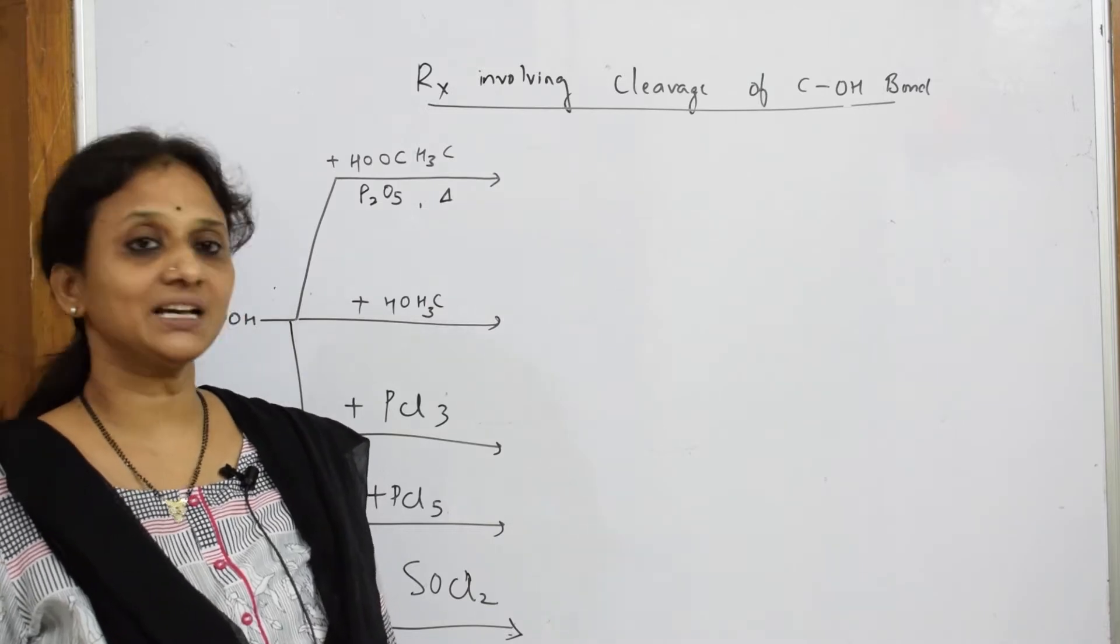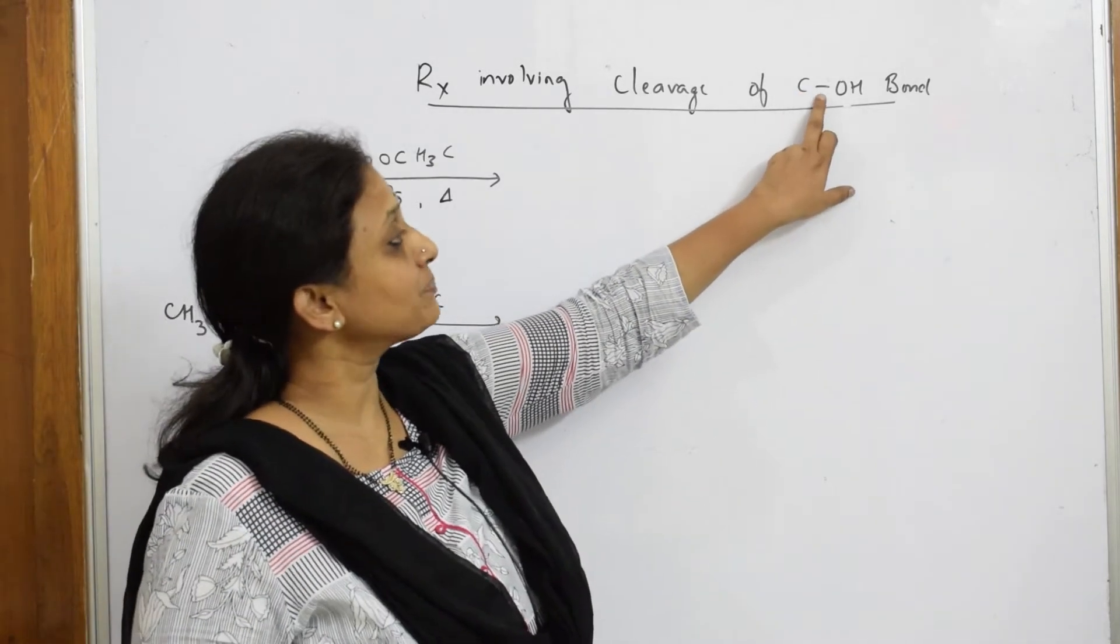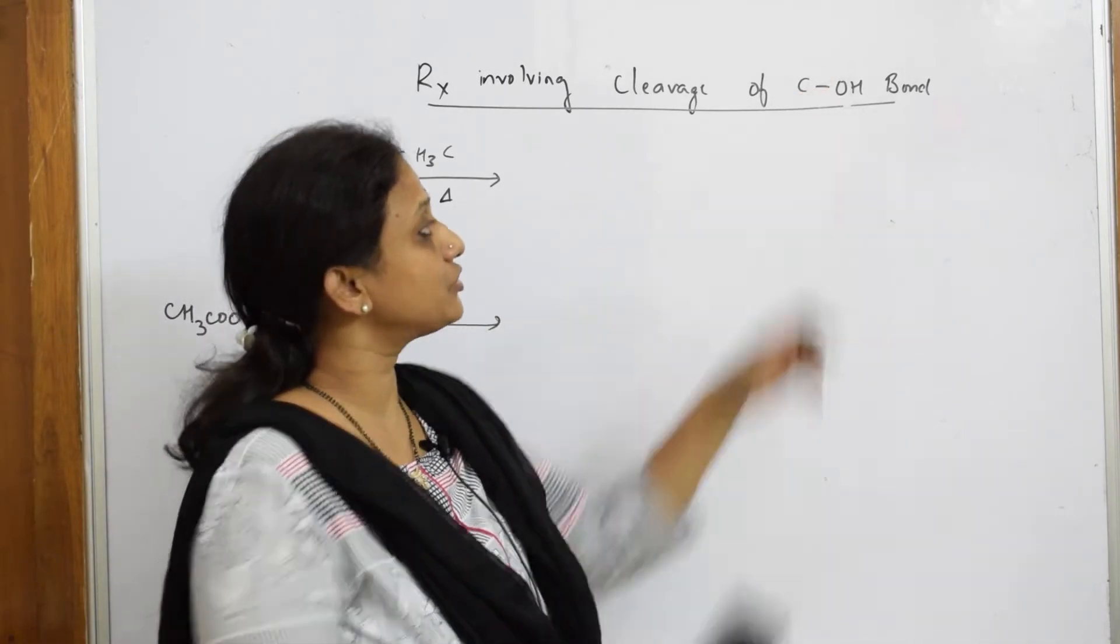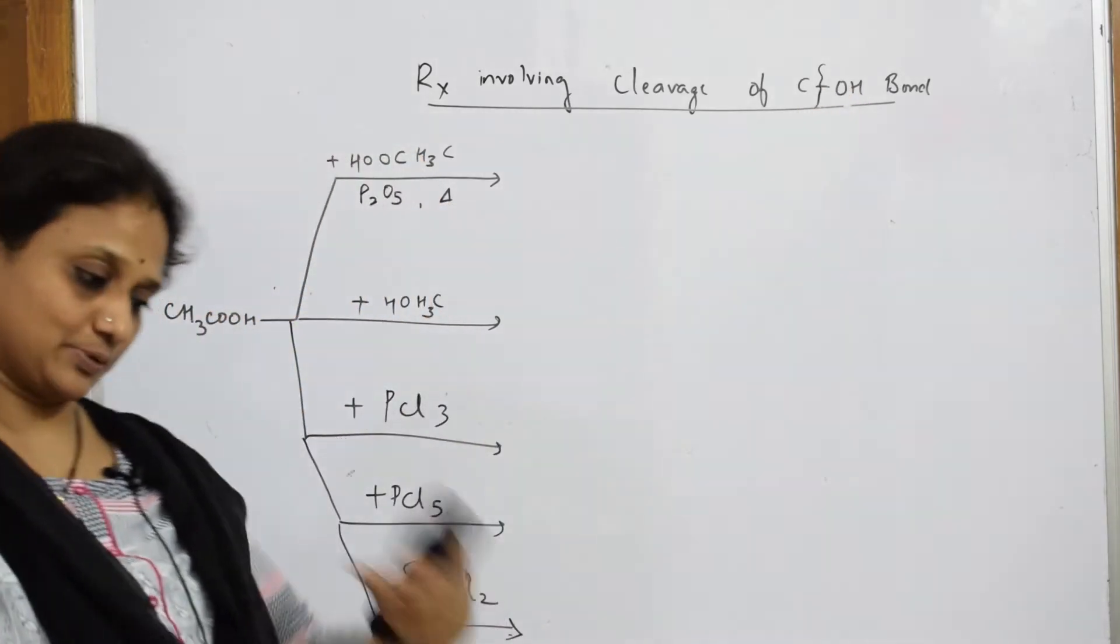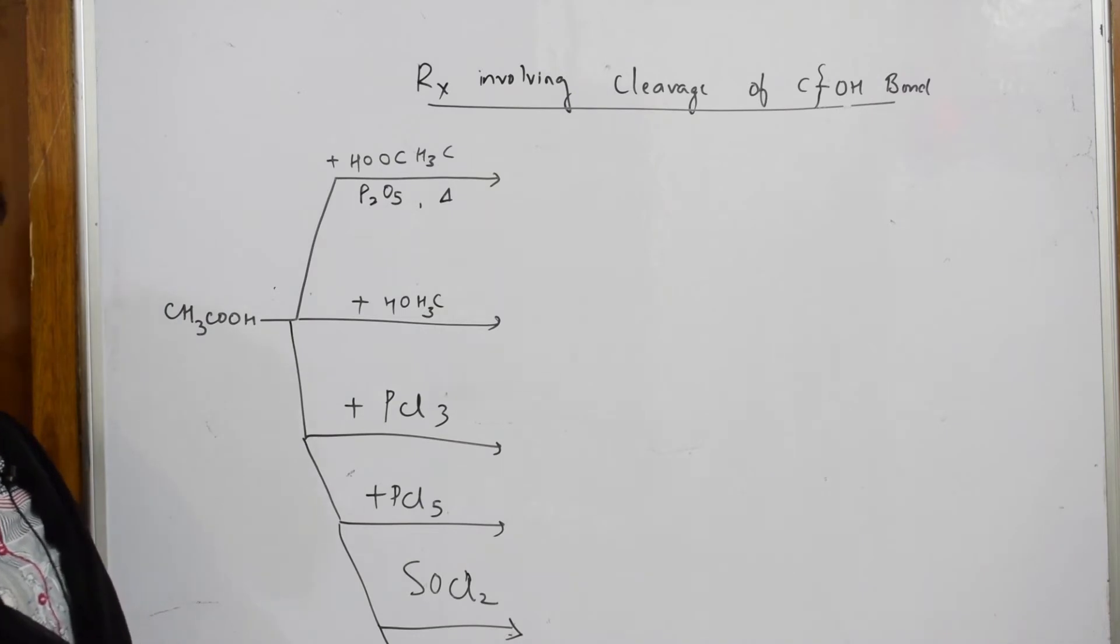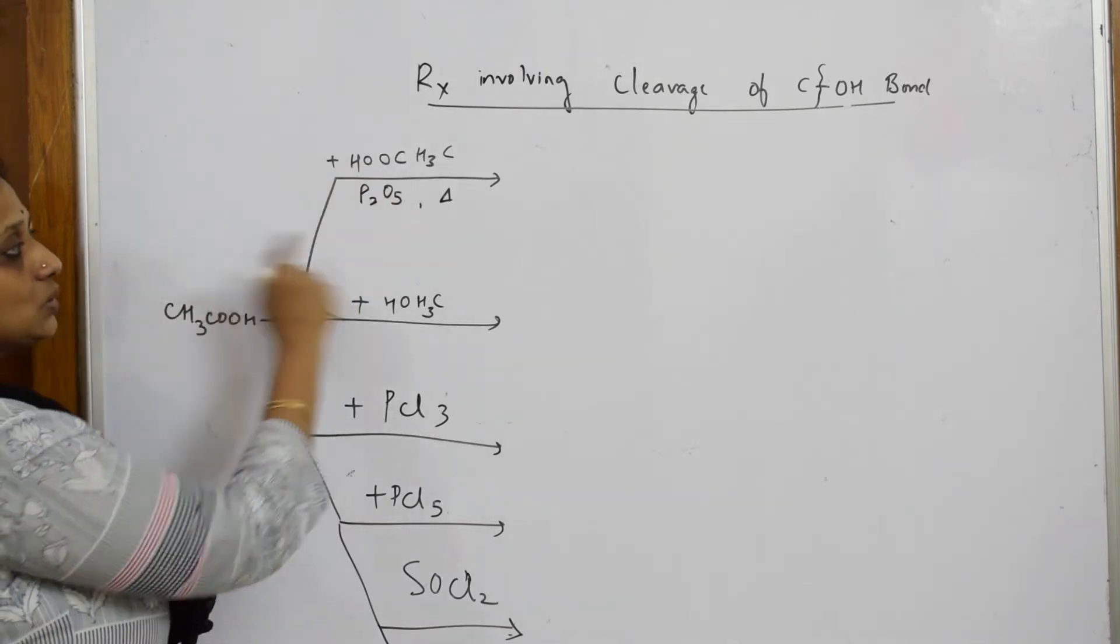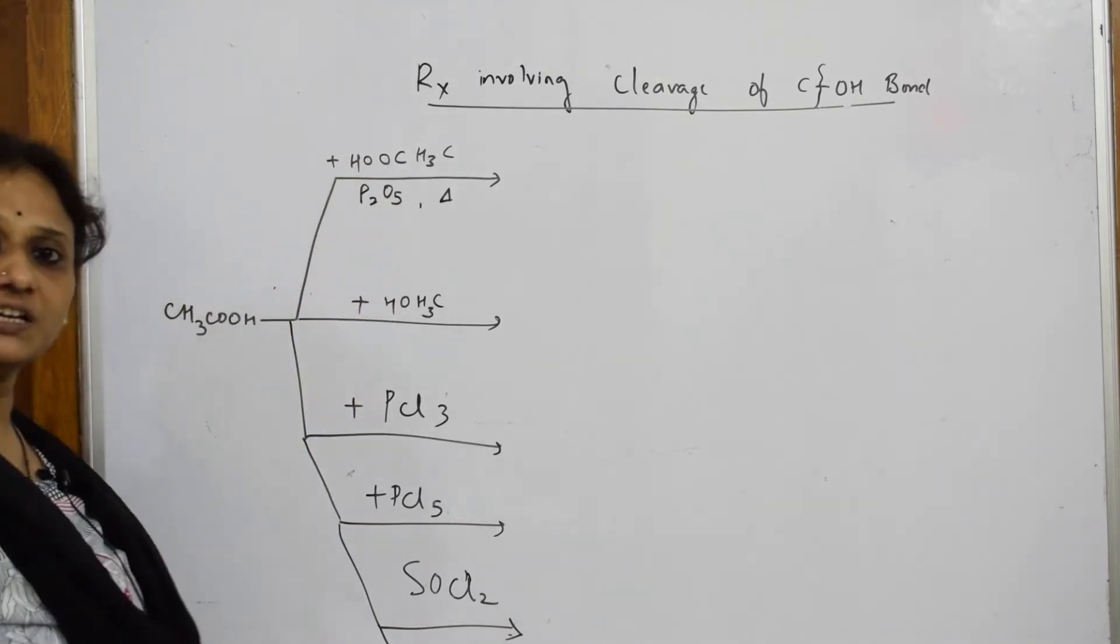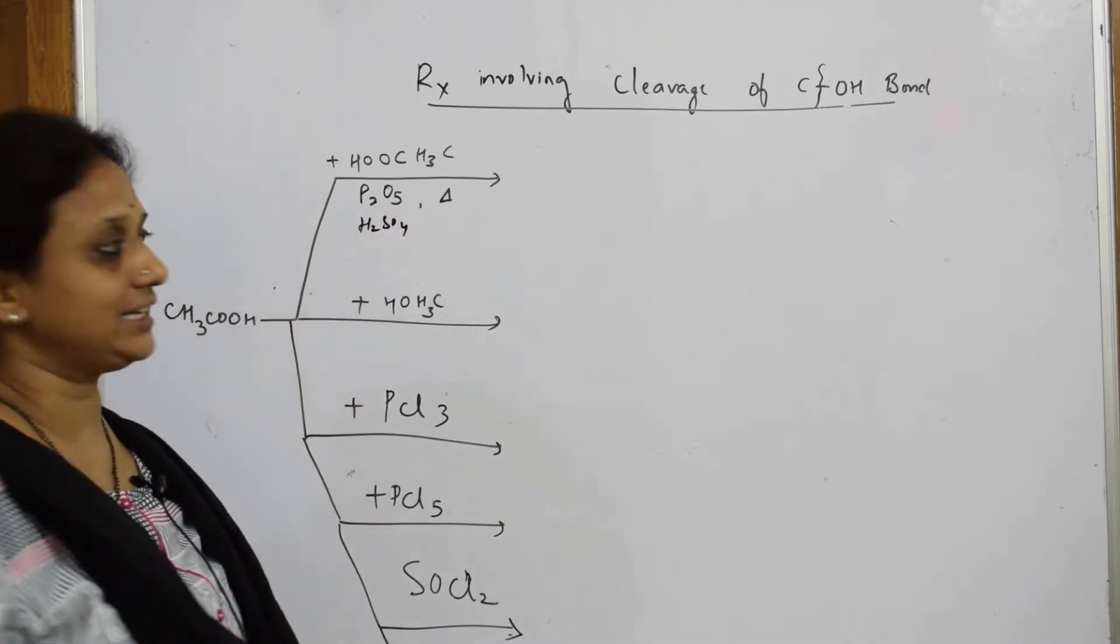Right now let us see the second category of reactions: cleavage involving C-O bond. Every time there is a cleavage of the bond occurring at this particular point. What is your nucleophile? If I pick up in terms of nucleophile, OH minus gets eliminated out. Whenever you see in the paper acetic acid with agents like P2O5 or H2SO4, these are dehydrating agents.